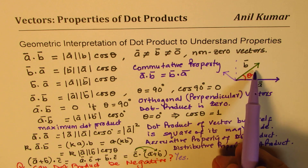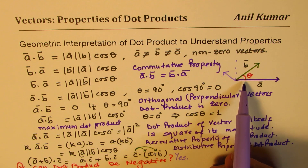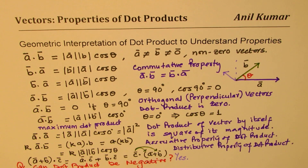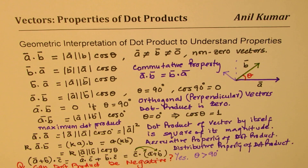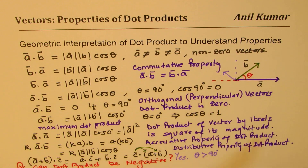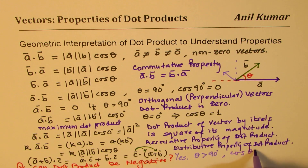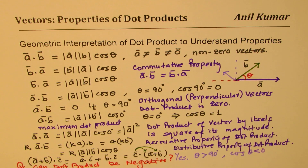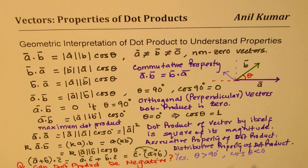As the angle increases, the dot product decreases and becomes more negative as it crosses 90 degrees. So the dot product can be negative when theta is greater than 90 degrees, because cosθ will be less than zero. However, a negative dot product does not give a direction — it is still a scalar quantity and should not be treated as a vector. We can simply interpret it as a negative value.